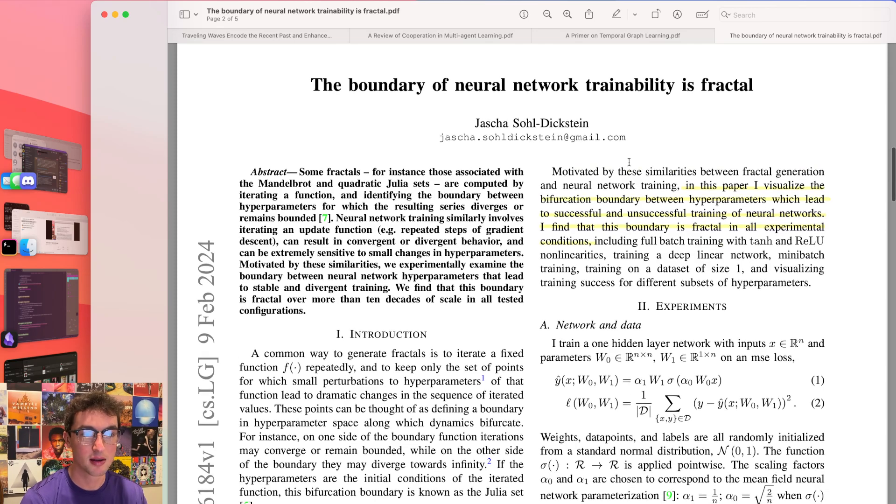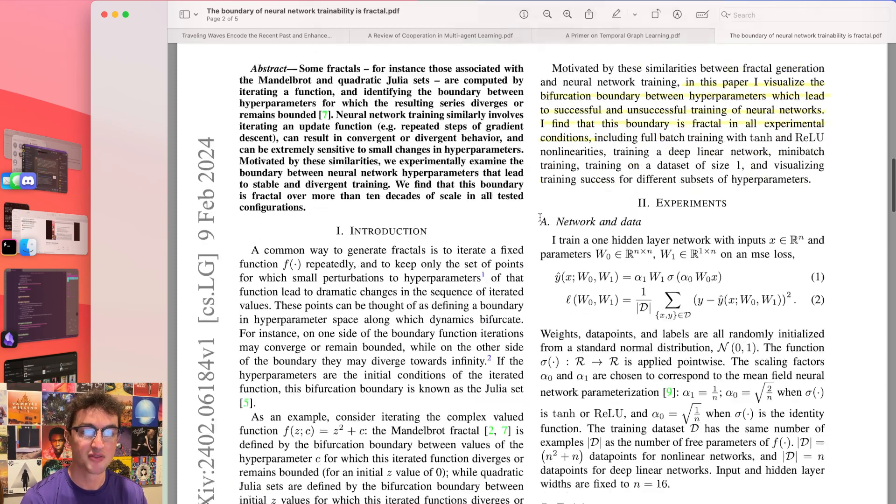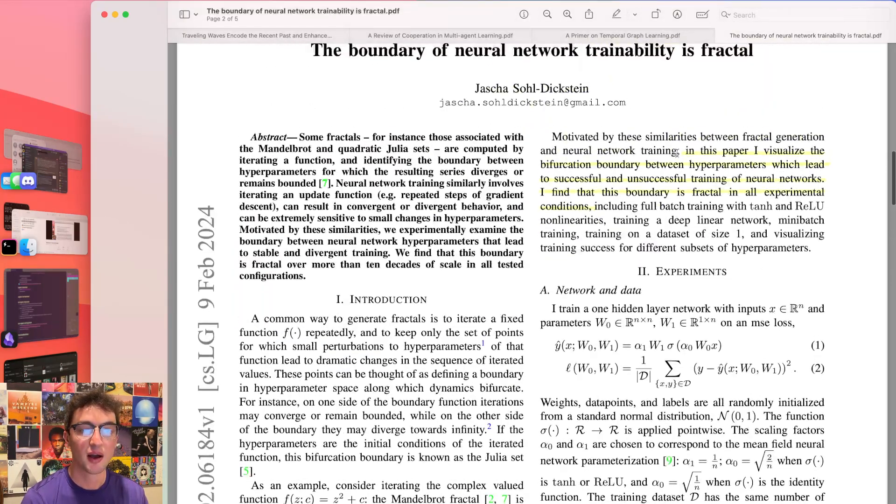I wish I had more recently looked back at this and decided to do what this guy did. Or not guy, person, Jasha. Hats off to Jasha. Let's get to it. So in this paper, I visualize the bifurcation boundary between hyperparameters which lead to successful and unsuccessful training of neural networks. Jasha finds that this boundary is fractal in all experimental conditions.